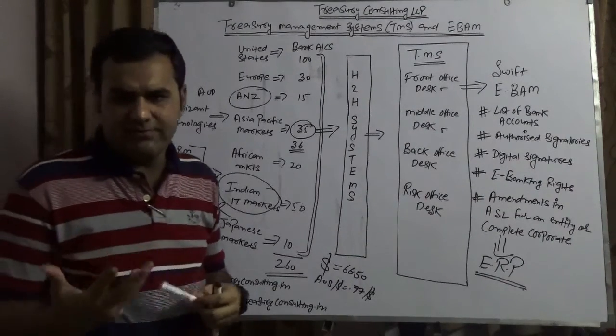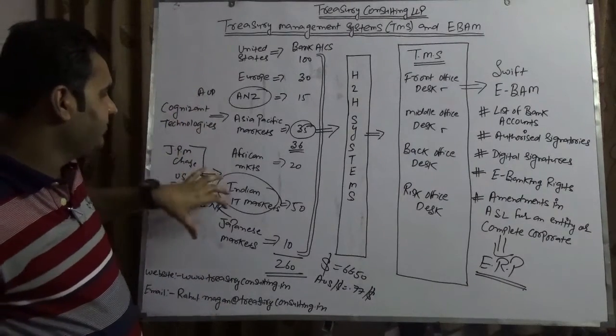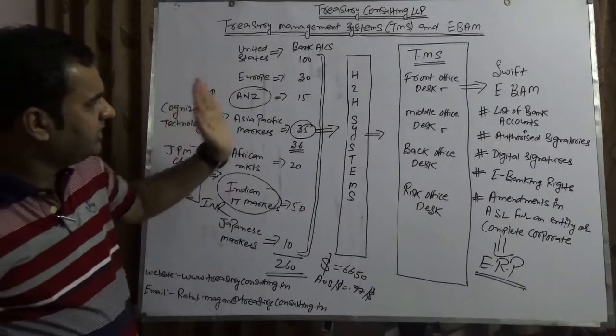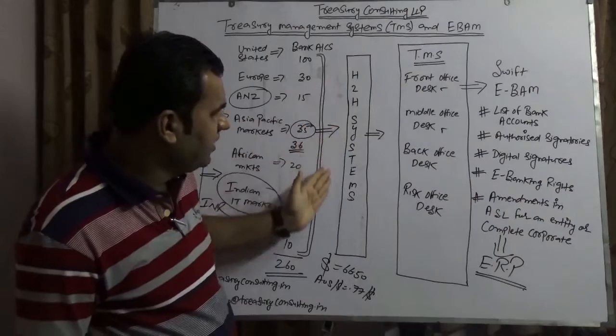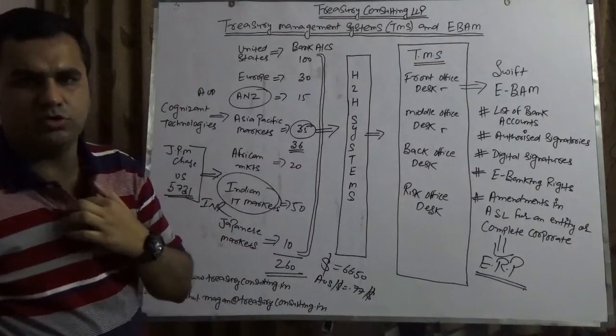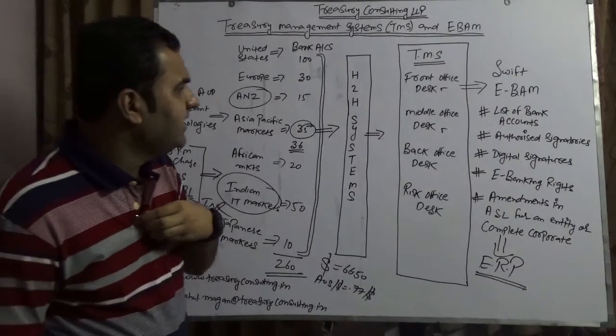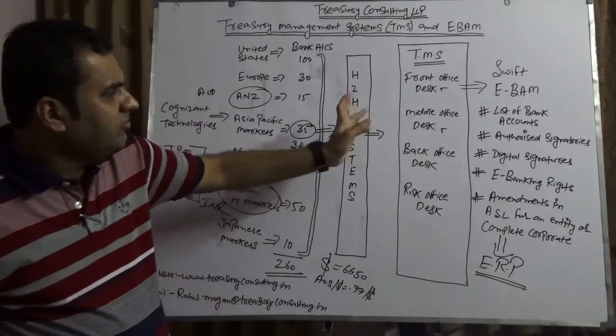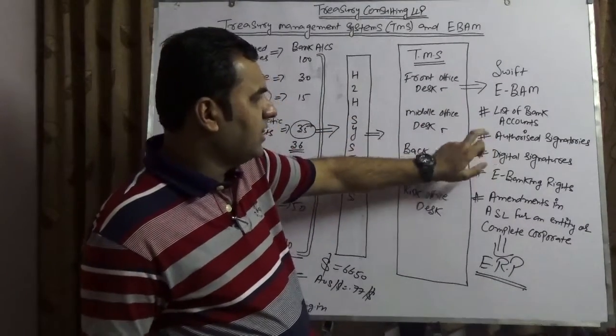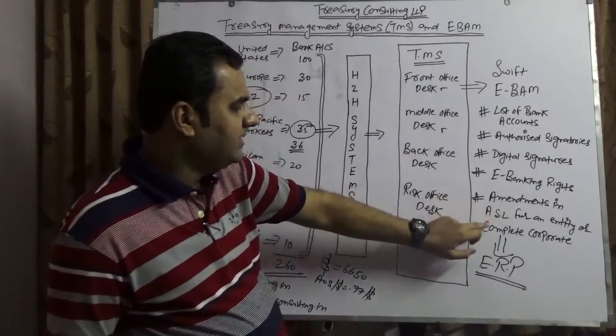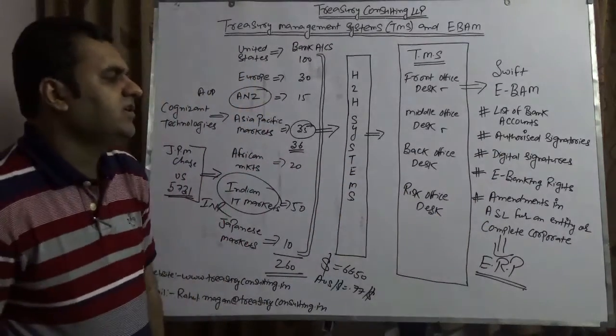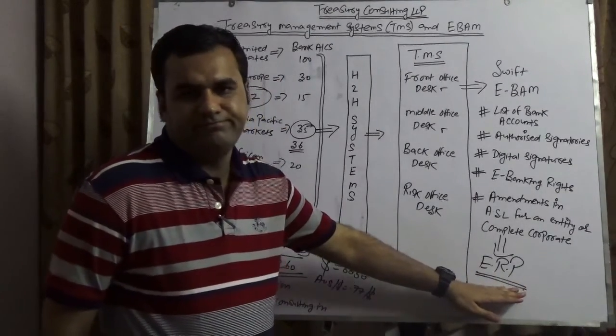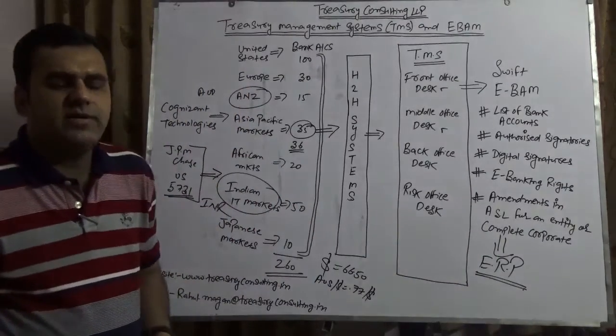How would the complete integration of EBAM happen? You have a company everywhere, you choose a bank like JP Morgan Chase with 260 accounts that link with host to host if you want to continue with it. Then you have TMS covering front office, middle office and back office. Then you have Swift EBAM which covers list of bank accounts, authorized signatory, digital signatures, e-banking amendments and ASL. Further you link this with ERP which is Enterprise Resource Planning. With this, the complete cycle of integration would happen and the front office desk of Cognizant would be able to manage everything electronically. It's a complete paperless transaction.